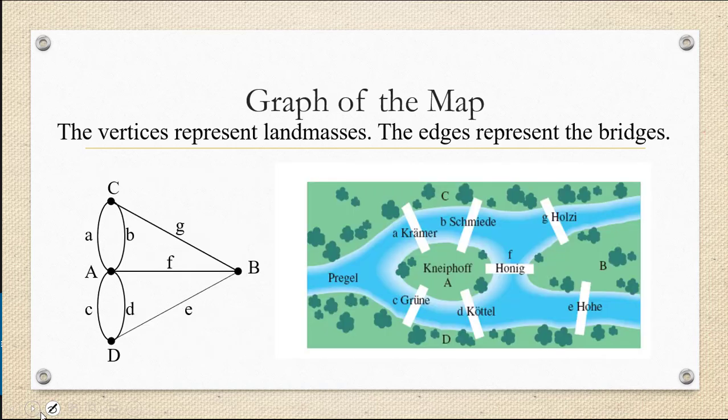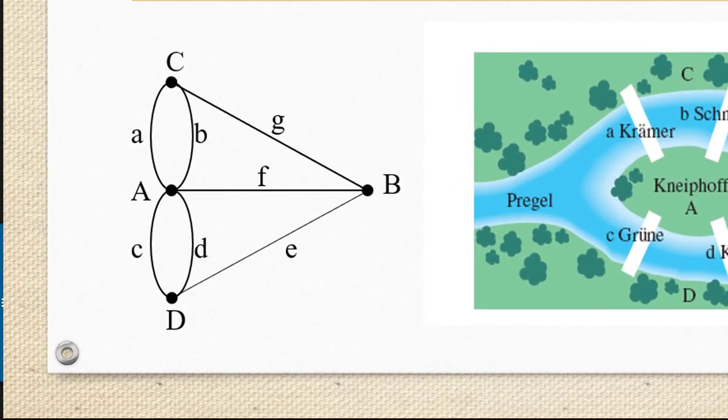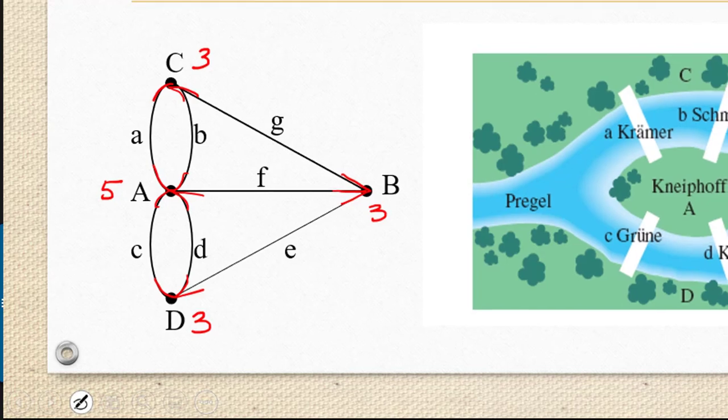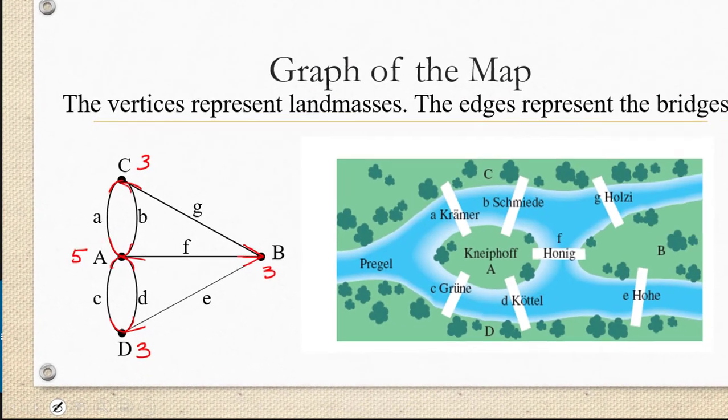So looking at the Konigsberg bridge problem as a graph, we check the degree of each vertex. Vertex A has five edges that meet at vertex A, so degree five. Vertex B has three edges, so degree three. Vertex C has three edges that meet there, so degree three. And vertex D has three edges as well. So in fact, in Konigsberg, every vertex has odd degree.